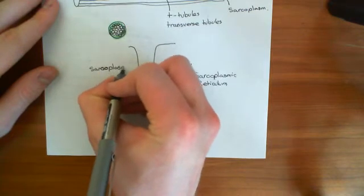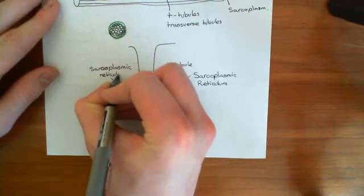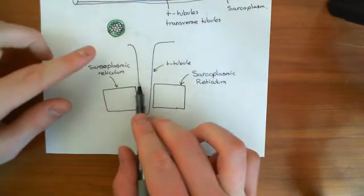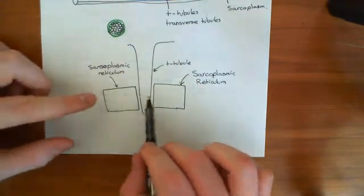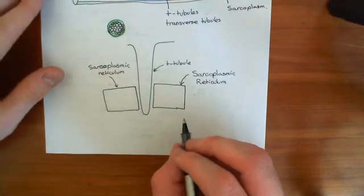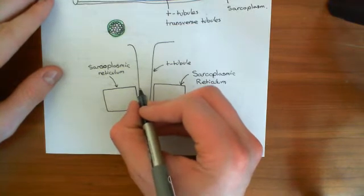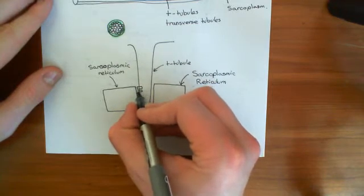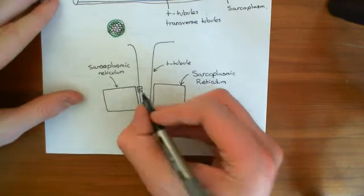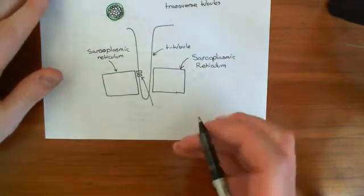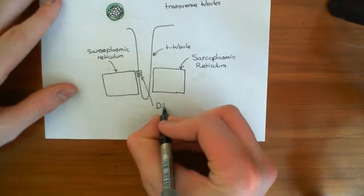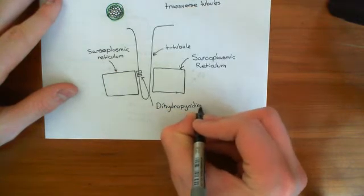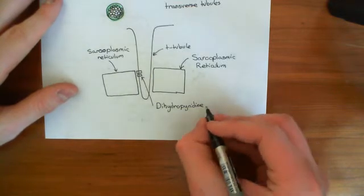So we've discussed how the action potential is going to propagate down the membrane of this T-tubule. What we need to see is what happens next. In the membrane of your T-tubule, you have what is known as a dihydropyridine receptor — this is the old name, still very pervasive in skeletal muscle physiology. However, it has another name in the rest of physiology: it's the same receptor seen elsewhere, and it's effectively an L-type calcium channel.